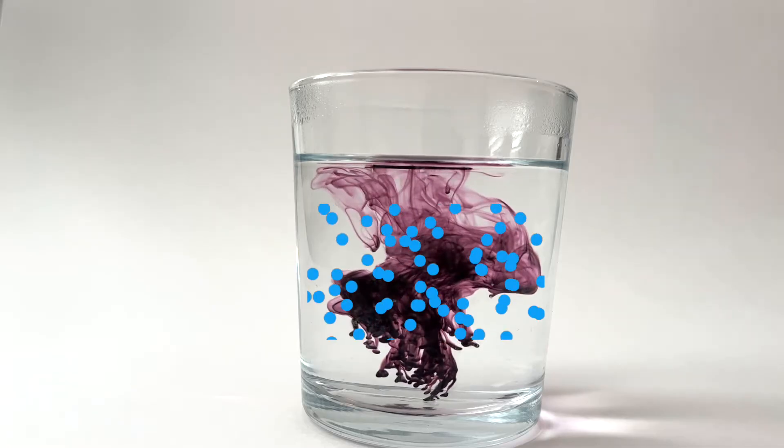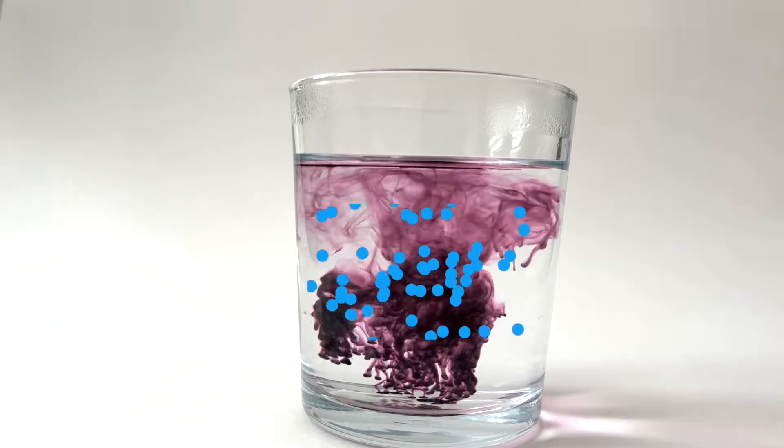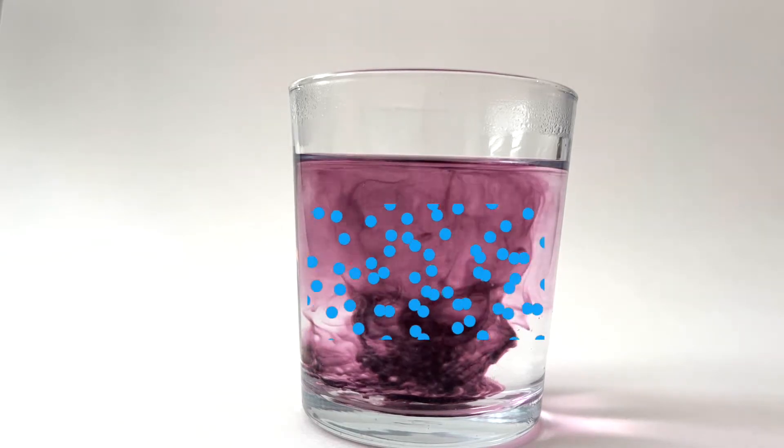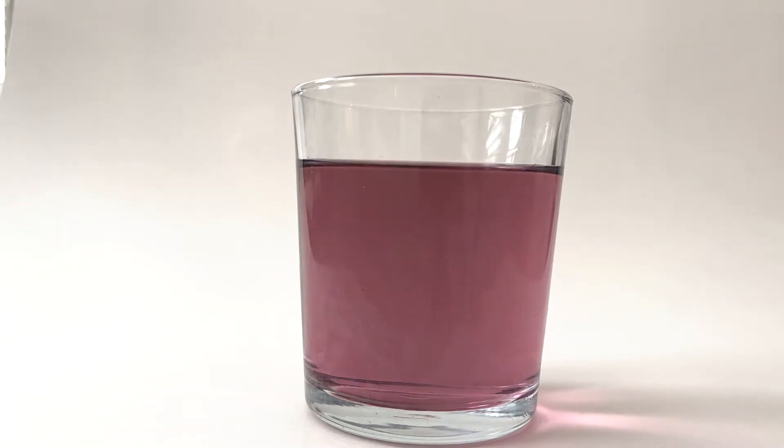This can be explained by how the particles are moving in a liquid. Unlike a solid, the particles in a liquid are able to freely move around and they collide with each other and can move past one another. It's the movement of these particles that mixes the dye throughout the entire cup.